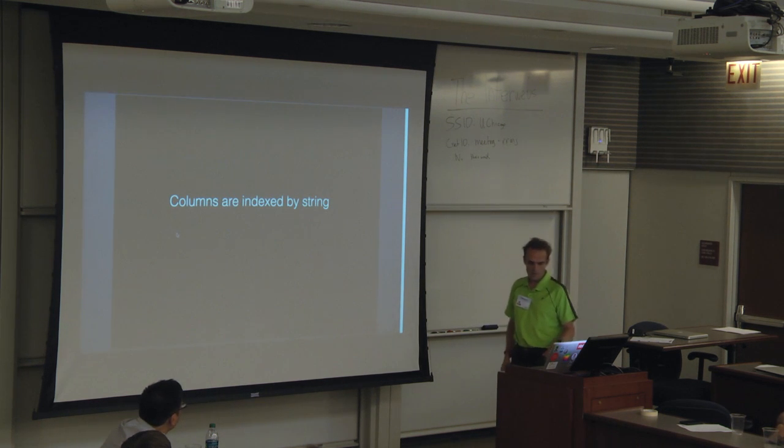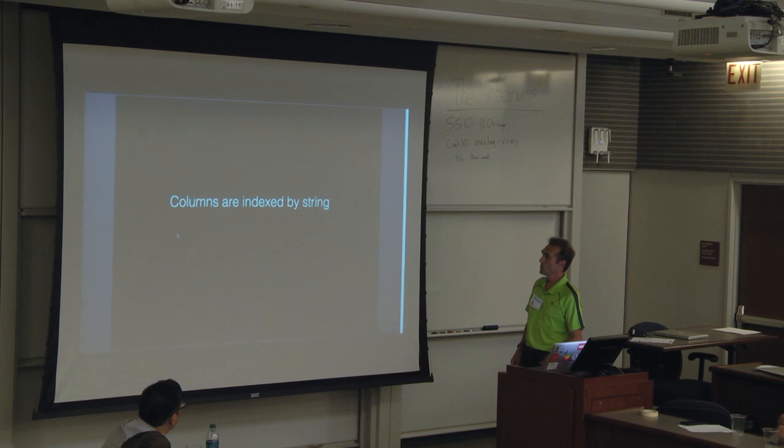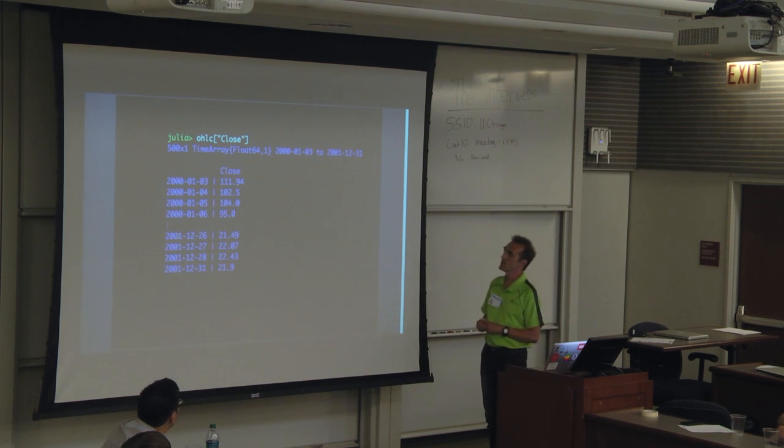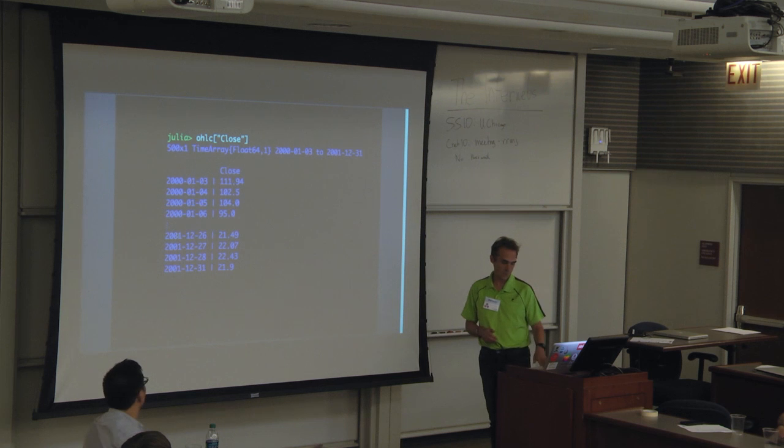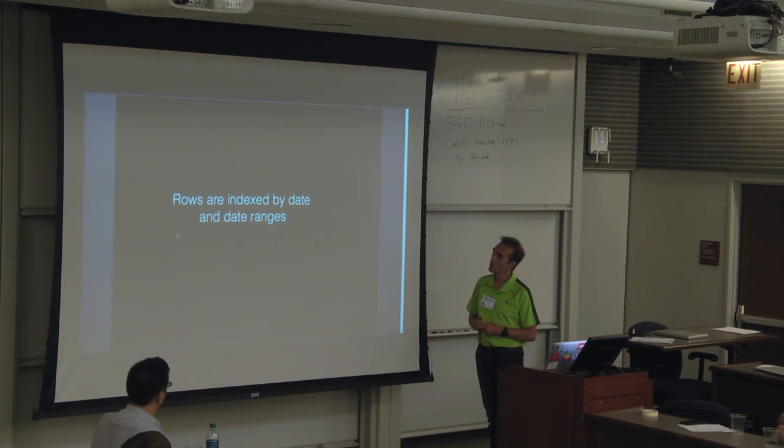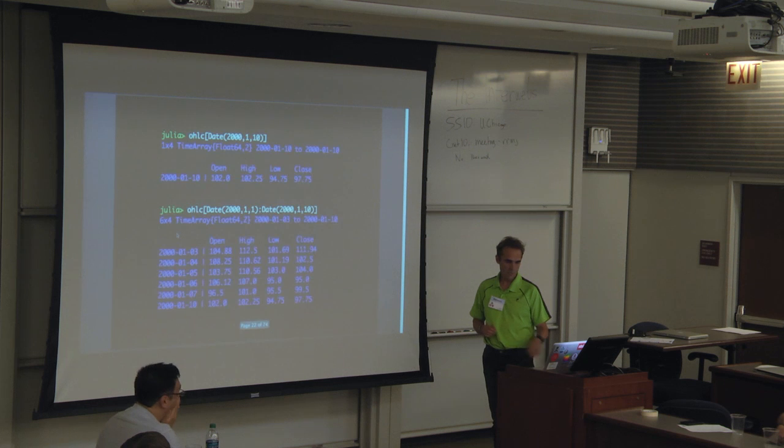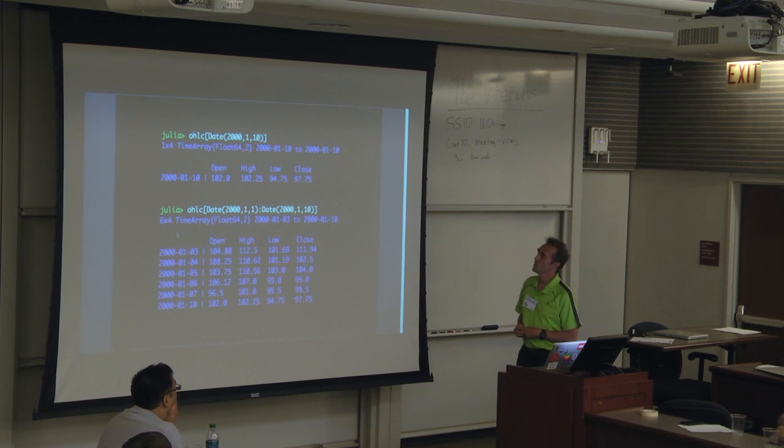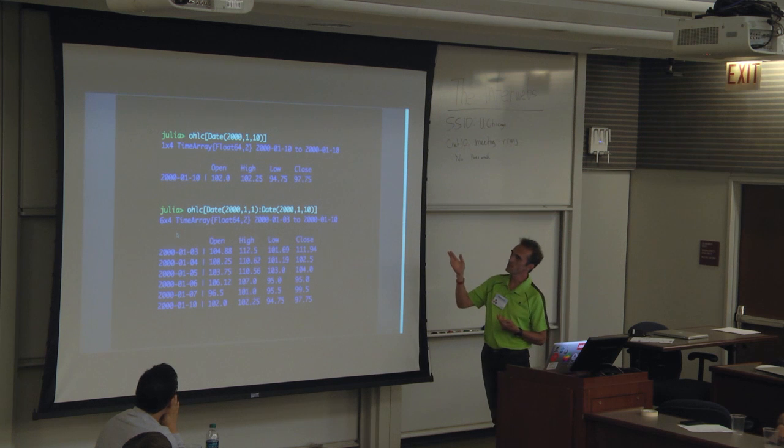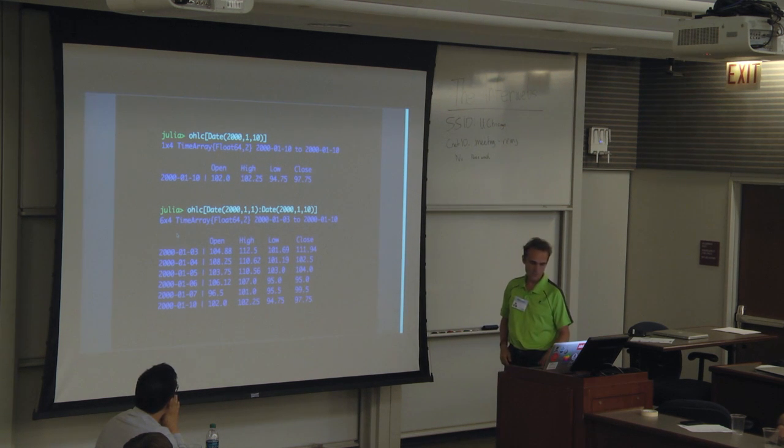Columns are indexed by string. So if we wanted close, we would just pass a string in the square brackets and we'd get close. Rows can be indexed by date and date range. This is similar to other packages as well. If we put in the square brackets a specific date, we'll get that date. And if we put a range of dates, we'll get a range of those dates and include that range that we can pass to it.